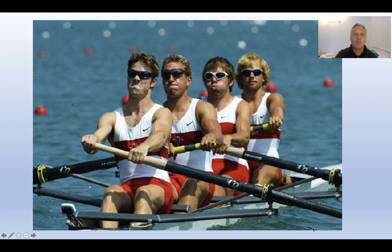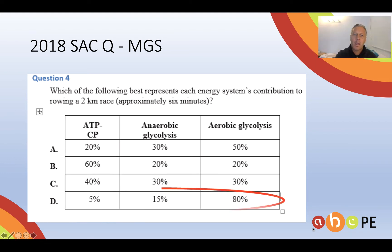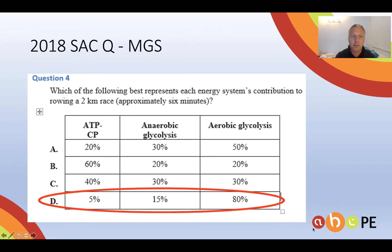But let's have a look at a multiple choice question based on rowing. Because it goes for six minutes, it has to be a predominantly aerobic event. And you will get significant contribution from the anaerobic glycolysis system and only a small contribution from the ATP-PC system.